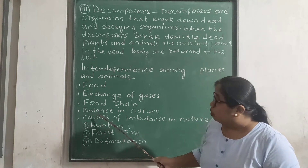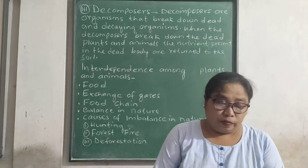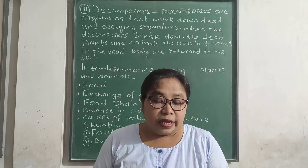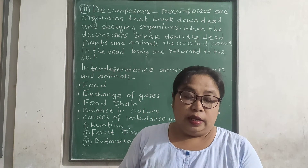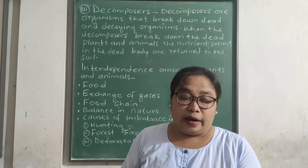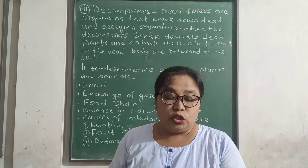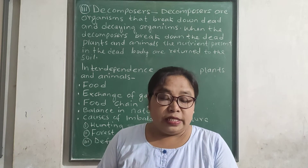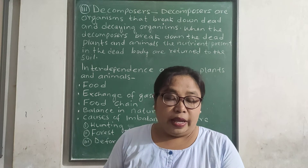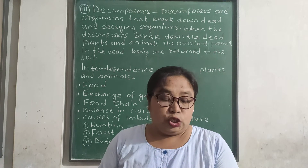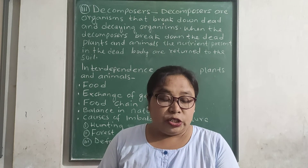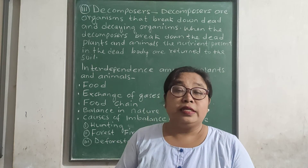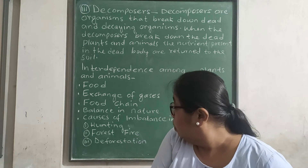Now let us discuss balance in nature. All living beings are important to maintain a balance in nature. If only herbivores exist, there will not be enough plants to feed them. If herbivores are less in population, carnivores will not have food to eat and will die of starvation. Therefore, if one species gets extinct, the entire food chain will be disturbed as living things are interconnected to each other. We need to make sure there is balance in nature as all plants and animals are essential.